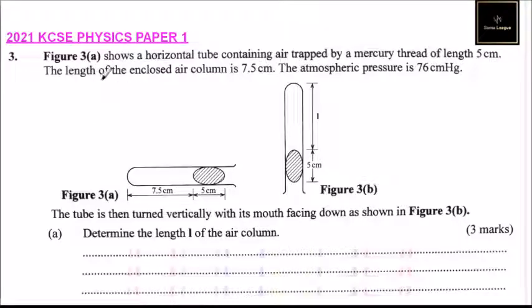Question number 3. Figure 3A shows a horizontal tube containing air trapped by a mercury thread of length 5 cm. The length of the enclosed air column is 7.5 cm. The atmospheric pressure is 76 cm of mercury.